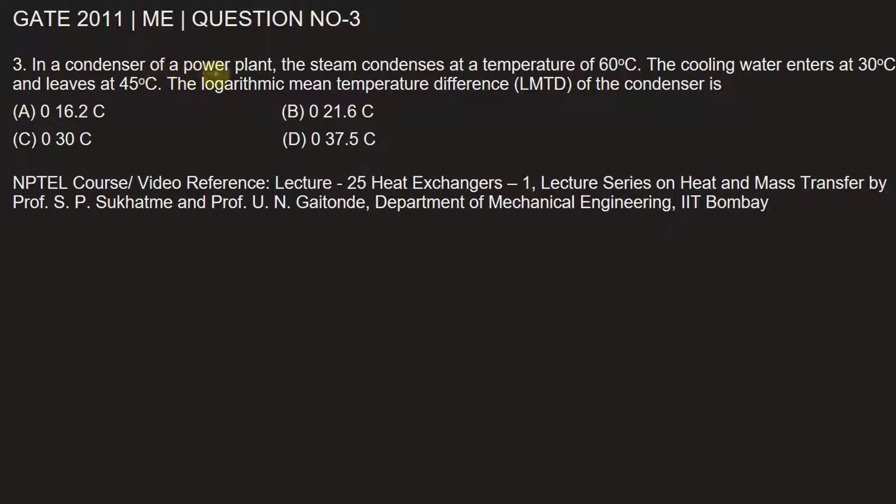The question is: In a condenser of a power plant, the steam condenses at a temperature of 60 degrees Celsius. The cooling water enters at 30 degrees Celsius and leaves at 45 degrees Celsius.